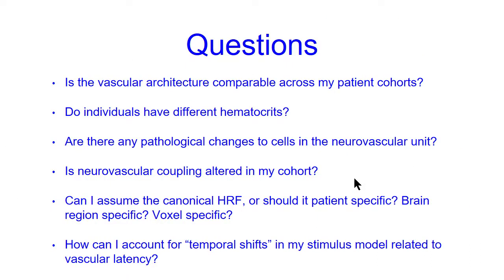Some questions to consider — and there are no exact right answers: Is the vascular architecture comparable across your patient cohorts? Do individuals have different hematocrits? Are there pathological changes to neurovascular unit cells influencing neurovascular coupling? Can you assume a canonical HRF, or should it be patient-specific, brain region-specific, or voxel-specific? And how do you account for different temporal shifts between your stimulus model and data due to vascular latency?